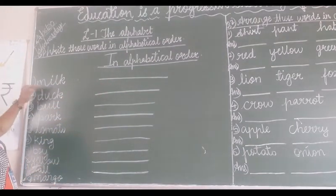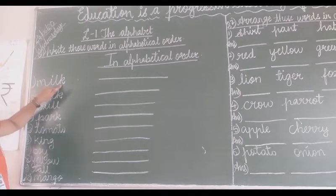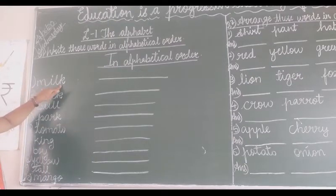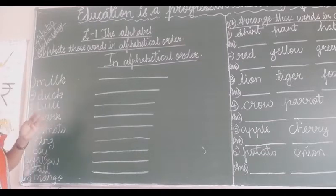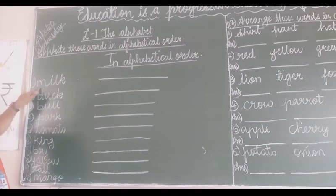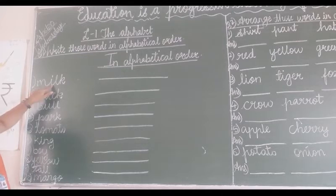Now here is M, I, L, K - milk. We have to see which letter comes first from these letters. A, B, C, D, E, F, G, H - is it there? No. Then I is there, so I will come first.